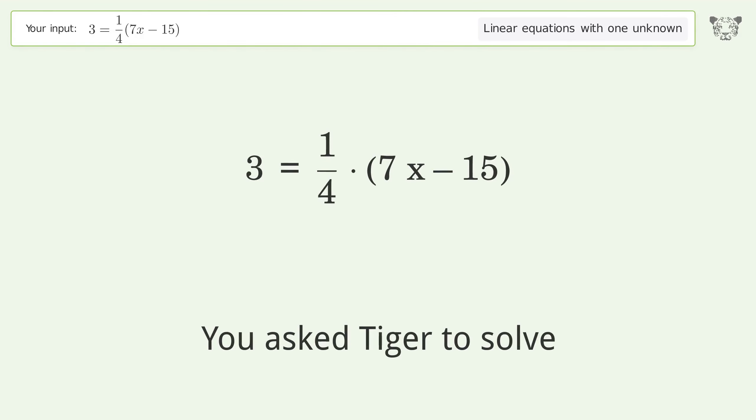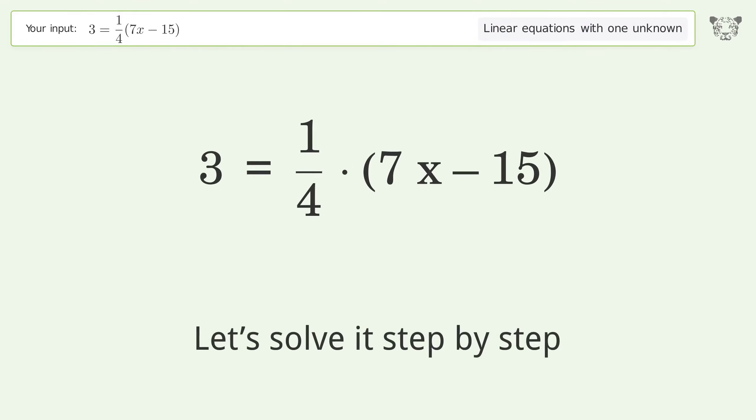You asked Tiger to solve this. It deals with linear equations with one unknown. The final result is x equals 27 over 7. Let's solve it step by step.